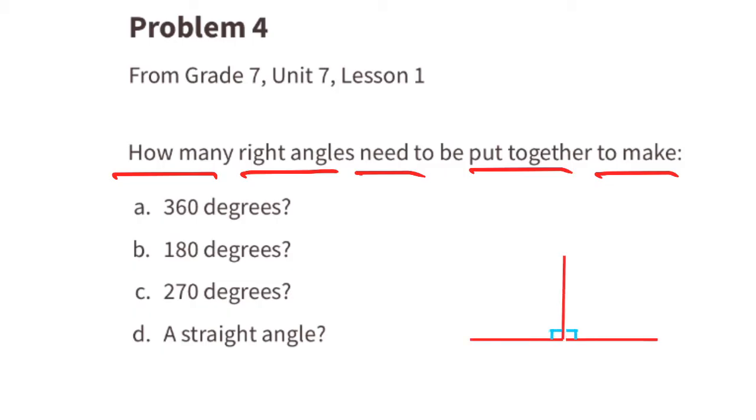Here's two right angles. 90 plus 90 equals 180, so B, 180 degrees, is made up of two right angles. And this straight angle is also made up of two 90 degree angles. Three right angles, or 90 times 3, is 270. So C, 270 degree angle, is made up of three 90 degree angles, or three right angles. Add a fourth right angle, and you have 90 times 4, which is 360. So A, 360 degrees, is made up of four right angles.